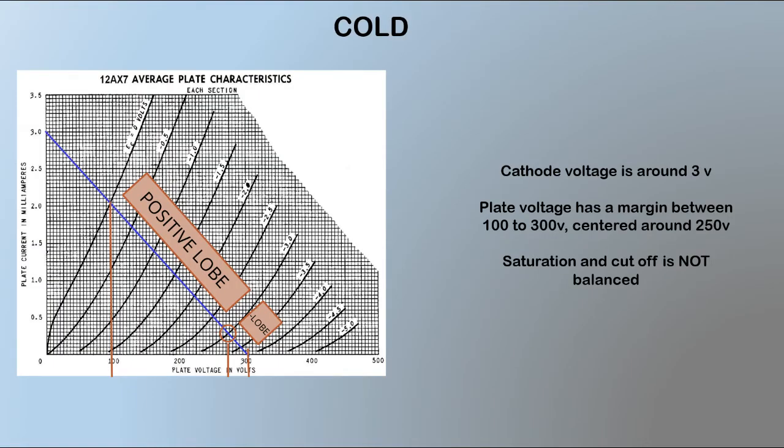Now let's analyze the cold bias. The bias point is fixed in the three volts negative line. We have very little space for the negative lobe to reach the cutoff of the tube, and we have much space for the positive lobe to saturation. In this bias the effect is the output signal will be clipped in the positive lobe and the negative cycle keeps clean.